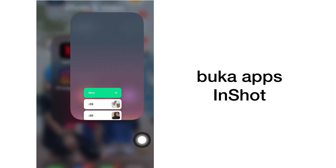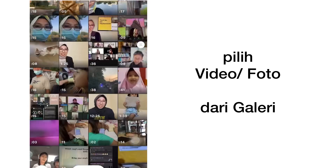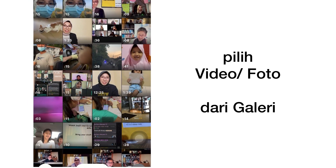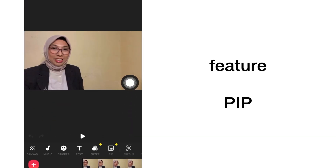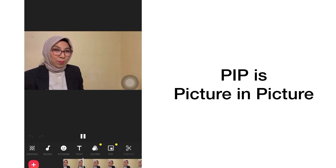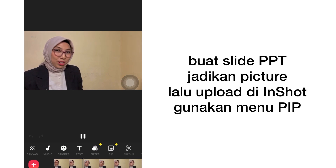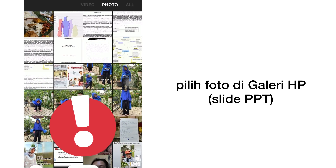Go to InShot and then click New, and then choose your video. After it is uploaded, you want to choose some photos as your slides. So you make your slides and then convert the slides to photos — it's easier to edit in InShot.